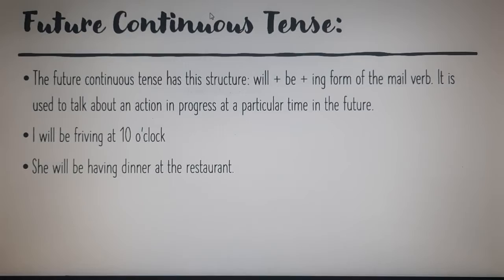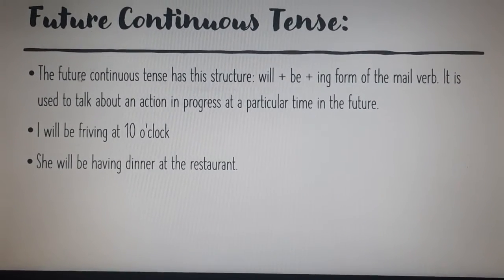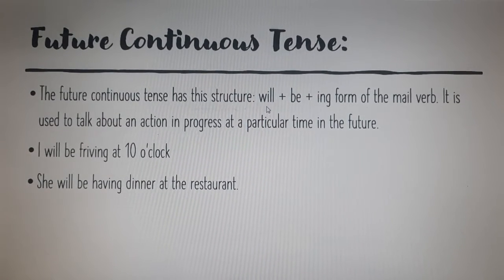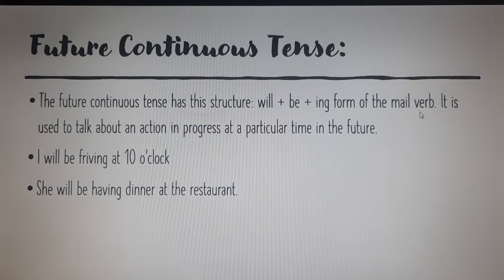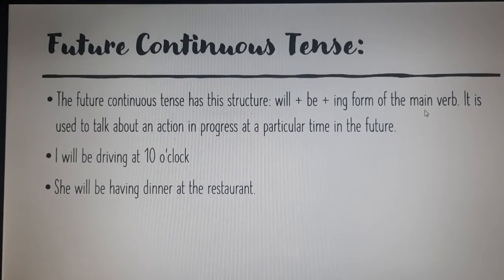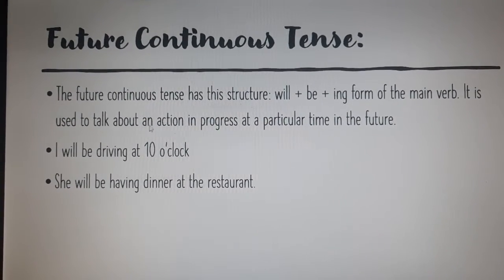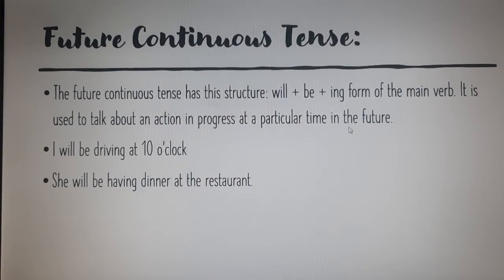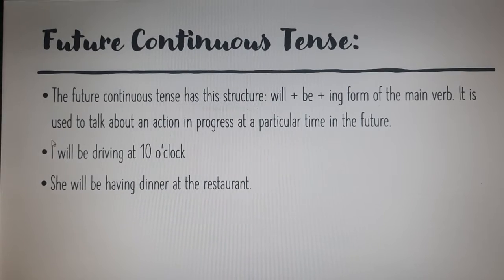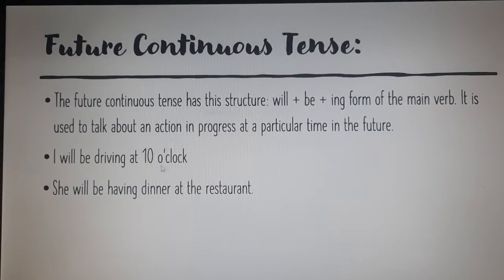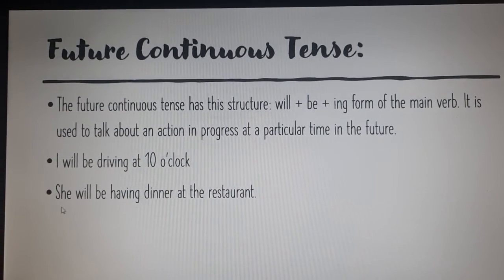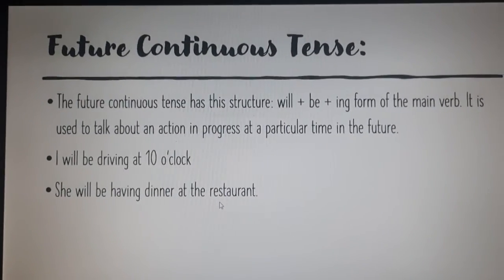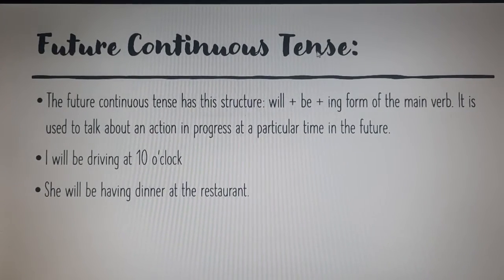The next one is future continuous tense. The future continuous tense has this structure: 'will' plus 'be' plus the '-ing' form of the main verb. It is used to talk about an action in progress at a particular time in the future. For example: 'I will be driving at 10 o'clock' and 'She will be having dinner at the restaurant.'